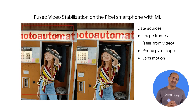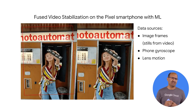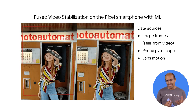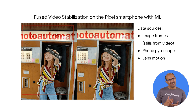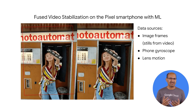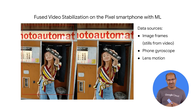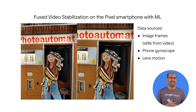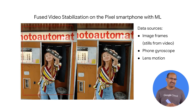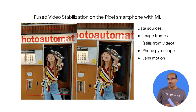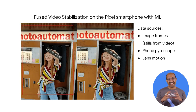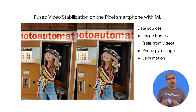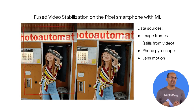What data sources do you think are needed as inputs to the model? You need the video data itself, which is essentially lots of individual images called frames ordered by timestamps. But we also need more contextual data than just the video itself — we need time series data on the camera's position and orientation from the onboard gyroscope and motion on the camera lens.